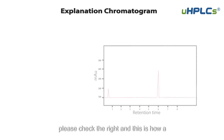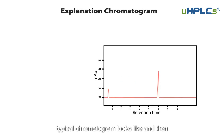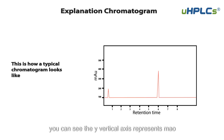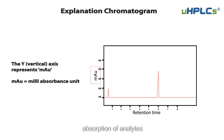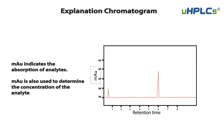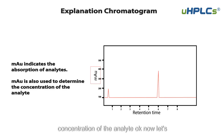Please check the right — this is how a typical chromatogram looks like. You can see the vertical y-axis represents MAU, which stands for milli-absorbance unit. MAU indicates the absorption of analytes and is also used to determine the concentration of the analyte.